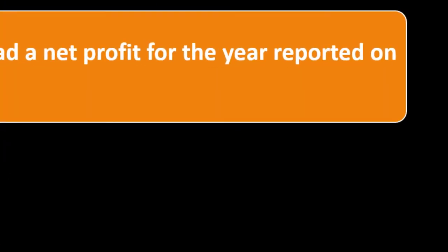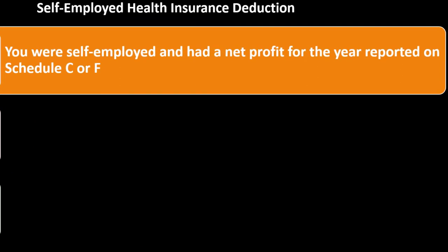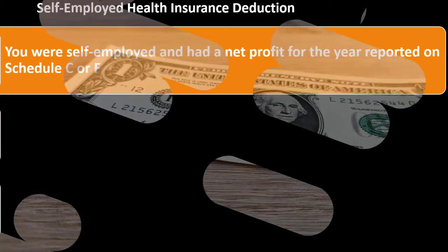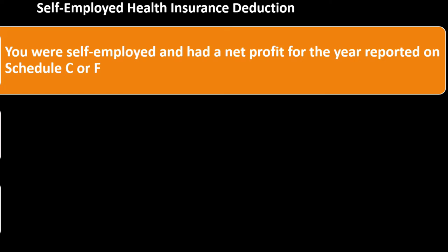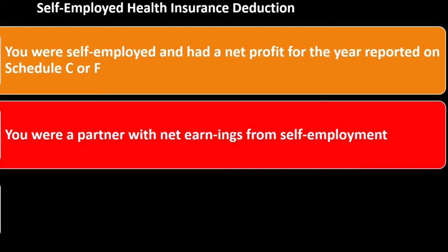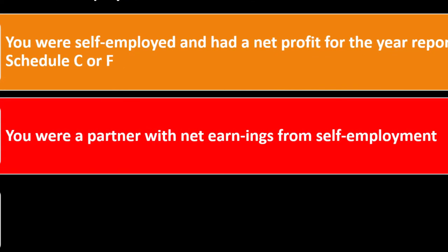One of the following statements must be true: you were self-employed and had a net profit for the year reported on Schedule C or F. That means you need a profit to benefit from this — if you had a loss, the deduction won't be allowed. The IRS is skeptical of losses in the first place because you might take a loss and match it against income; the IRS wants to tax income but not be subject to your losses.